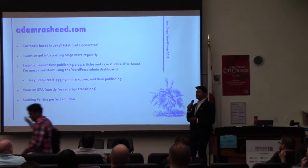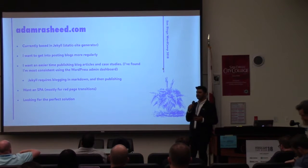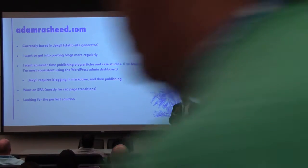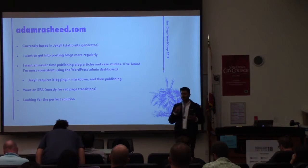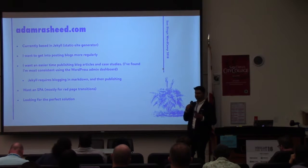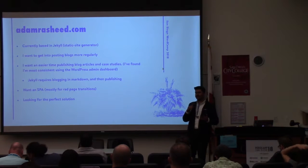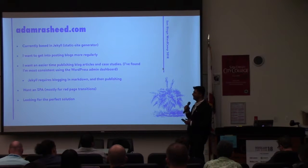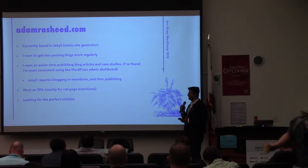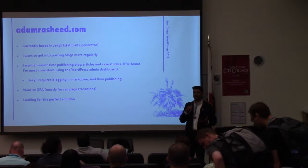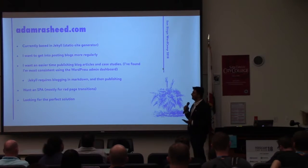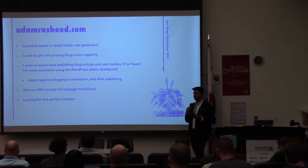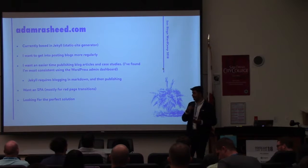My site, AdamRasheed.com, is currently just a flat static website based on Jekyll, which is a static site generator. I kind of hit a hurdle — I have a few blog posts and case studies on there, but I stopped blogging. I want to get back into blogging more regularly. I realized that when I had my blog in WordPress, I had a much more consistent blogging workflow using the WordPress admin. Since WordPress is really built from the ground up for blogging, I haven't found a better way. So I wanted to shift back to using WordPress for blogging while also getting all the benefits of a single-page web app with React.